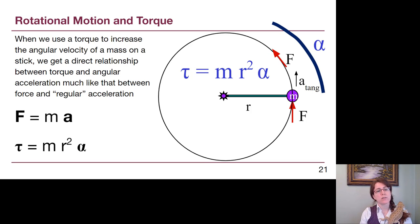And so what we end up with is something that looks really similar to our big chapter 4 idea, that force is mass times acceleration, and torque, which is kind of a rotational equivalent of force, is equal to m r squared times the angular acceleration, the rotational equivalent of acceleration.